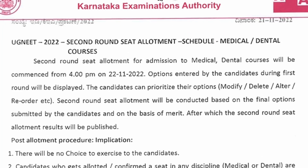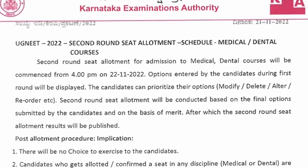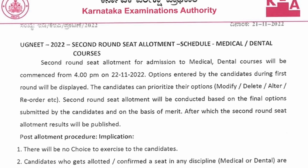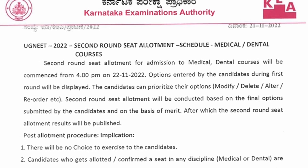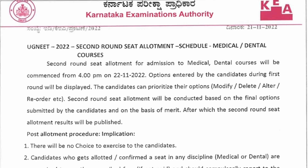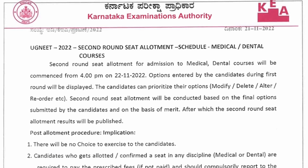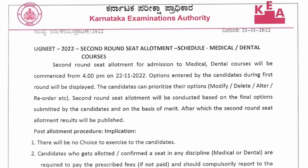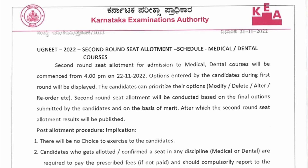In the second round, you cannot enter any new options, but you can modify, delete, alter, or reorder your options in the option entry window. Second round seat allotment will be conducted based on the final options submitted by the candidate and on the basis of merit, after which the second round seat allotment result will be published on 26th November.